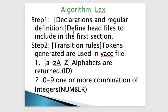Step one is declaration and regular definition. The definition section includes all declarations, header files, and constant variables. Step two is the transition rule, or rule section. The rules specify that anything between a to z or A to Z will be accepted, and anything between zero to nine or combinations of digits.